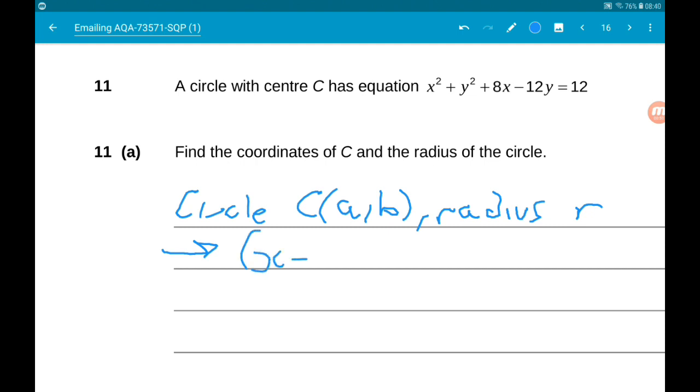The general form is x minus a squared and y minus b squared is equal to the radius squared. So what we're going to need to do is complete the square twice on the left hand side for x and y and then get a number on the right hand side. So let's first of all rewrite the equation.